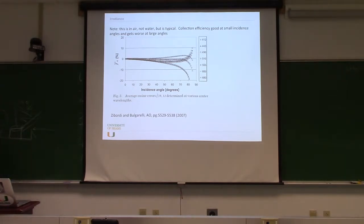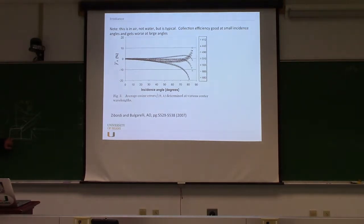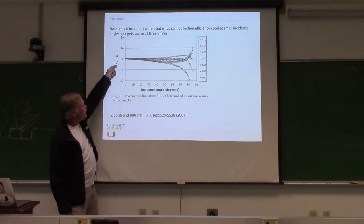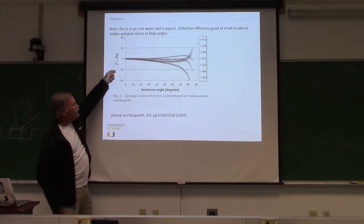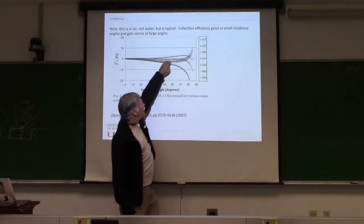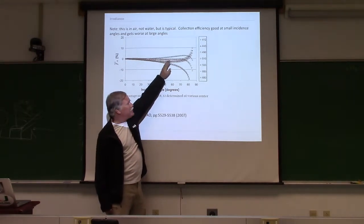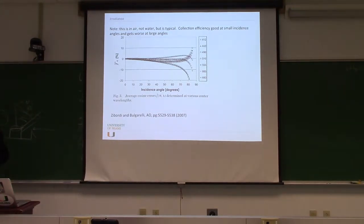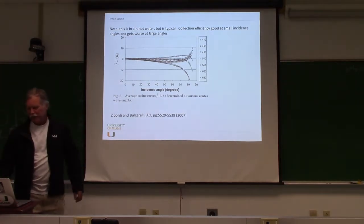The diffuser material is white and scatters light in all directions; some keeps diffusing through to the detector. The collection efficiency relative to cosine response is close to zero error up to about 50 degrees, then diverges rapidly. So at low sun angles, an irradiance collector will have more error. For the downwelling light field, which is mostly within ±50 degrees, the cosine collector does a pretty good job.